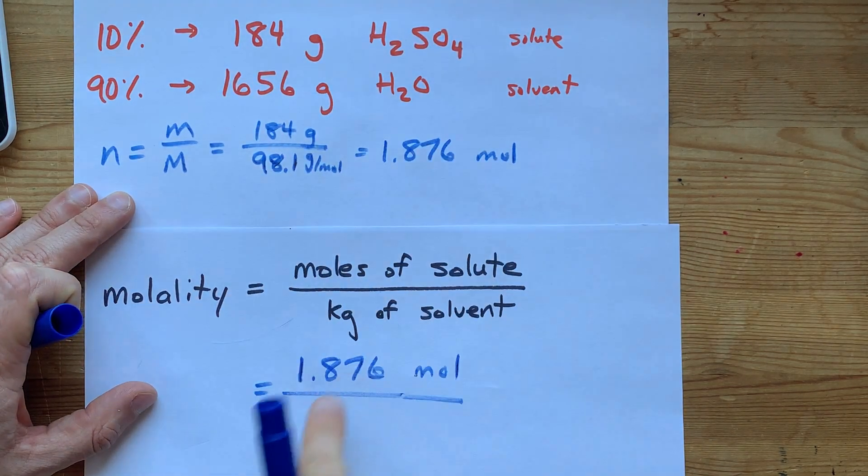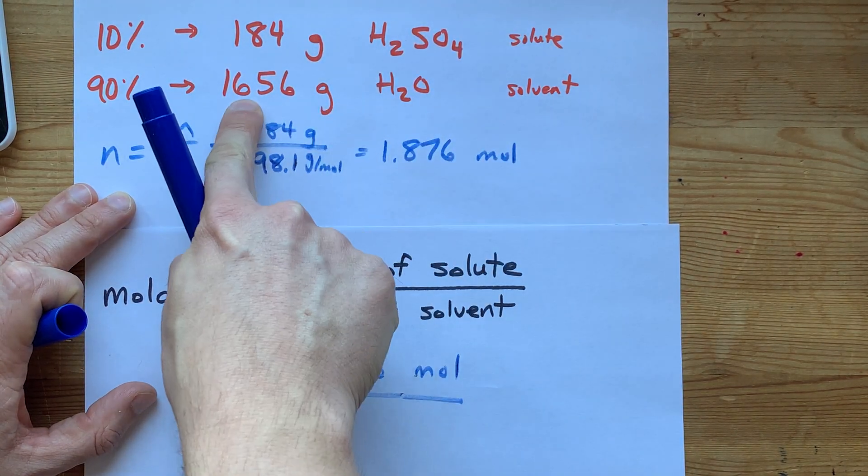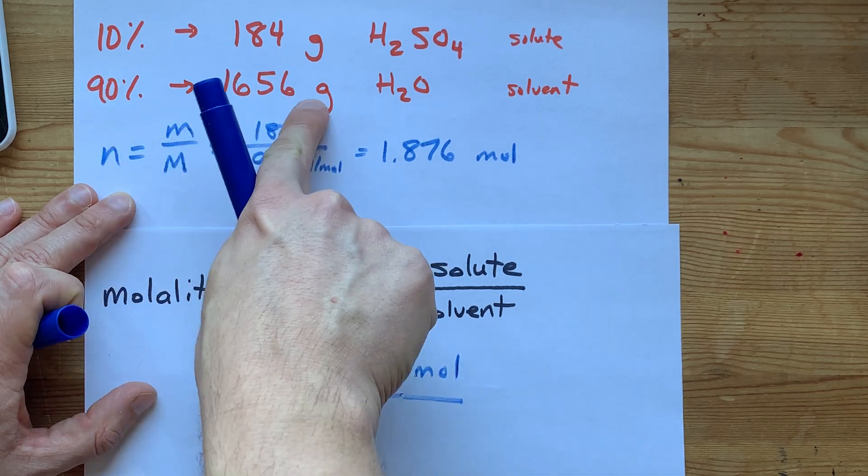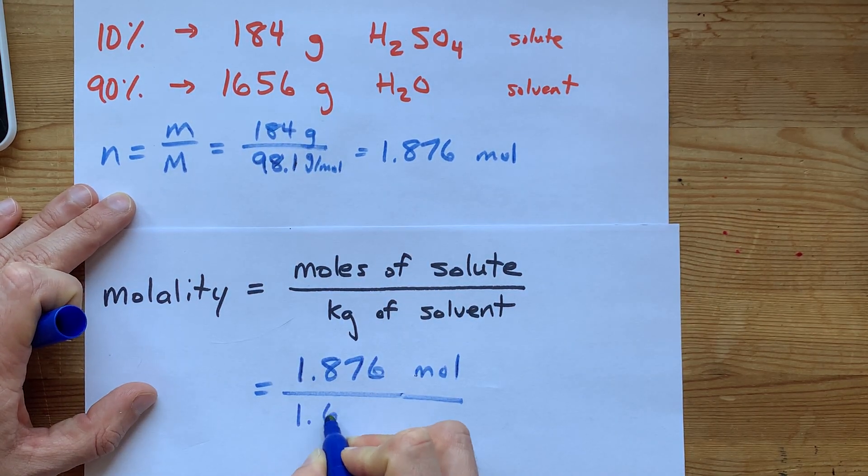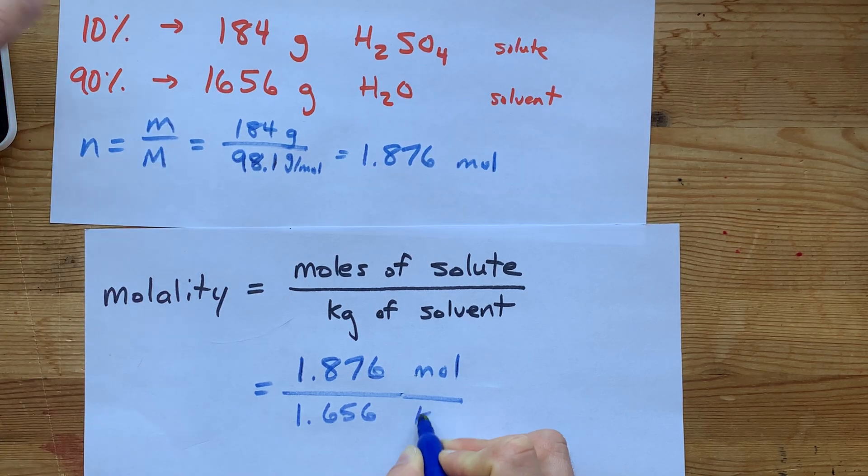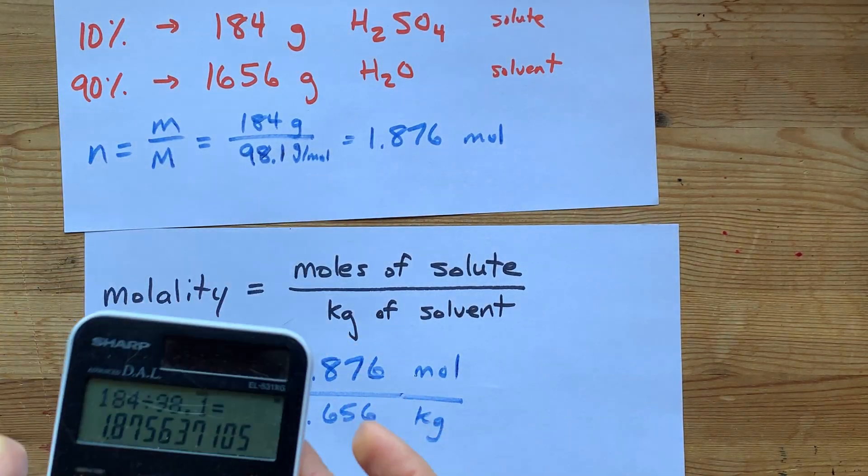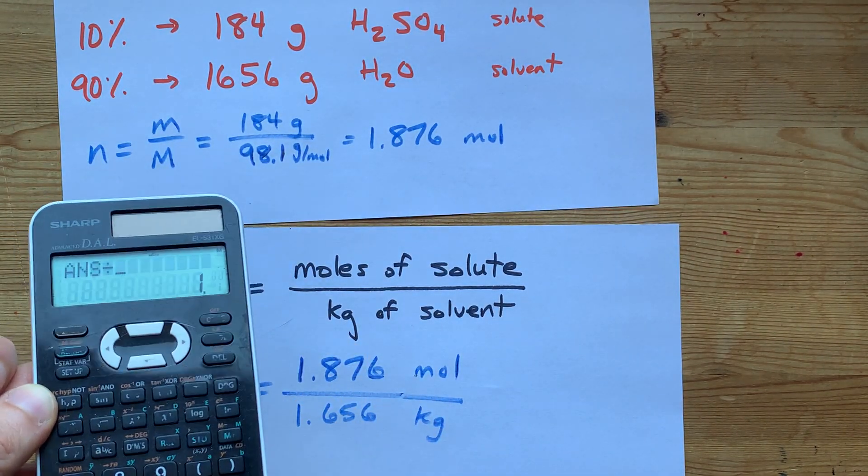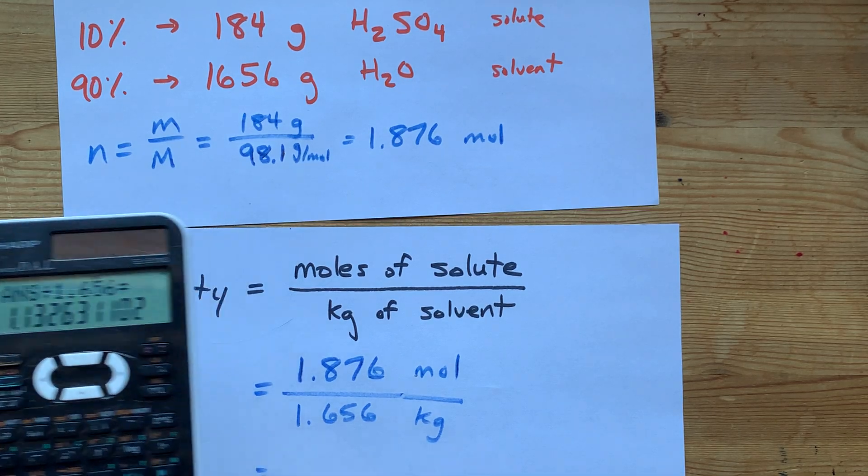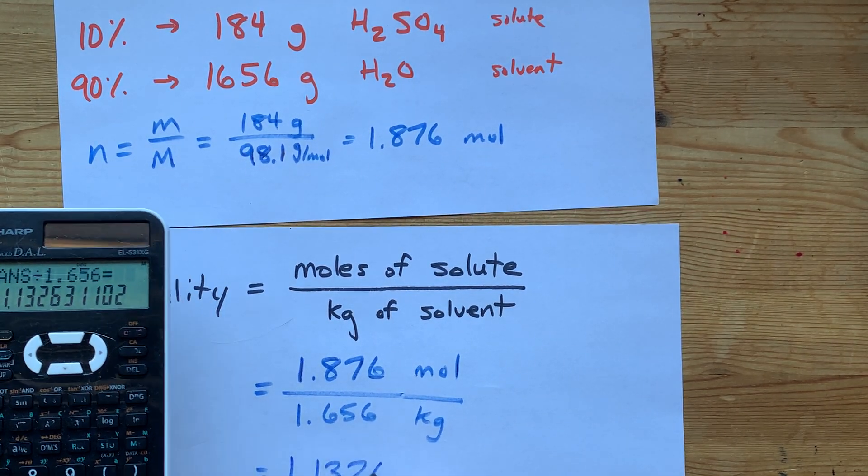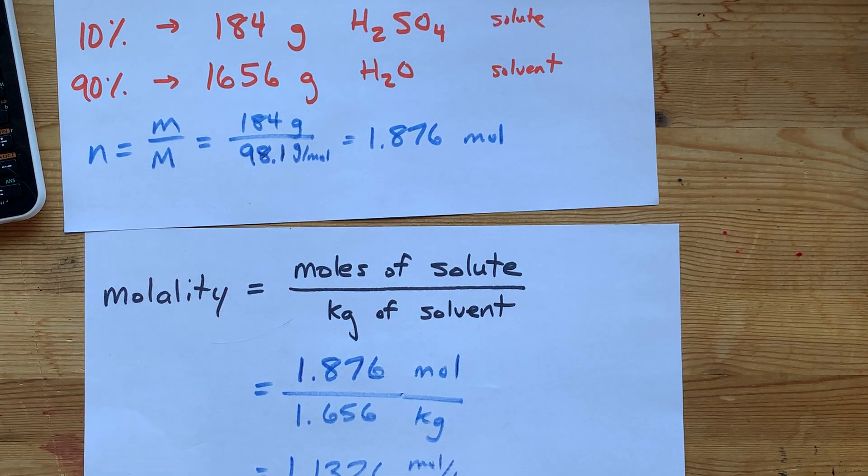And we're going to need kilograms of solvent. To convert grams to kilograms, we just divide by 1,000. That's 1.656 kilograms. Great. This is just going to be a quick calculation. Divide it by 1.656. I end up with 1.1326 moles per kilogram.